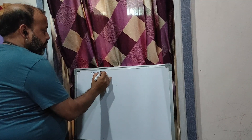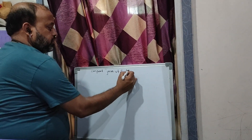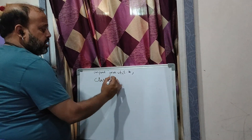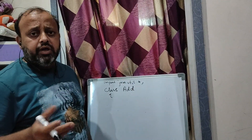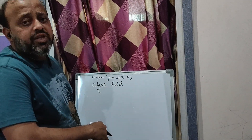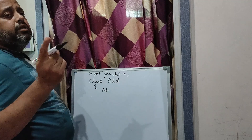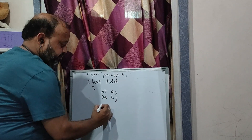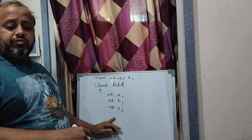First thing, I will import the package: import java.util.*. Next, whatever class name is given you have to use that. Here nothing is given so I take class 'Add'. In exam questions something will be given — for example, class Employee, class Result, class Student — so this we have to declare. Next comes the declaration of instance variables. Instance variables are variables declared inside a class. Here I am using: int a, int b, and int c.